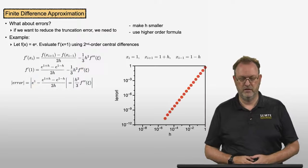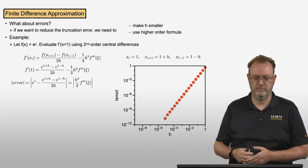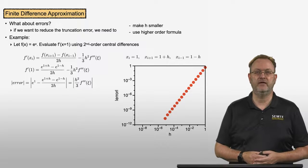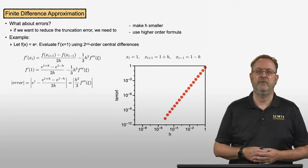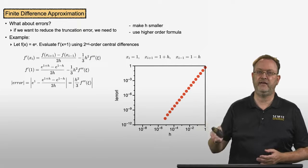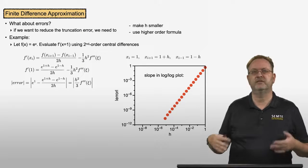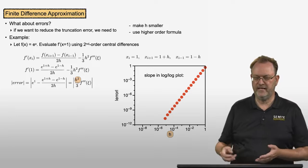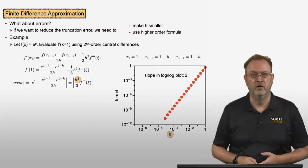If I use different spacings of h, code this up with second-order central differences, calculate the error, and plot that error versus the spacing h, I will find that in a log-log plot all of the calculated values line up on a straight line. We saw before that the slope in the log-log plot for a second-order method is given by the order of the method — so in this case the slope would be 2.